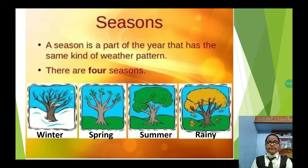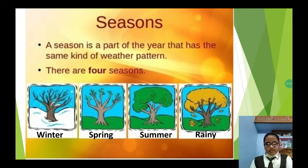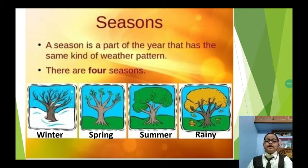First of all, I am going to tell you what seasons are. A season is a part of the year that has the same kind of weather pattern. There are four seasons: Winter, Spring, Summer and Rainy.